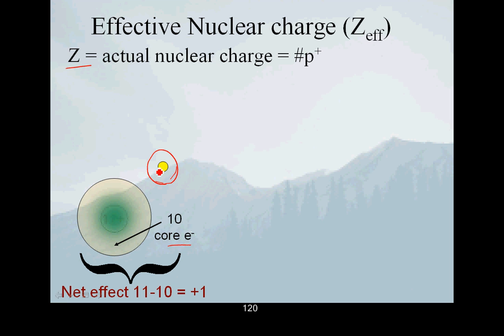So the nucleus might have 11 protons, but the 10 core electrons almost cancel it out. Because remember this electron doesn't like these core electrons - they're negatively charged. So the sodium atom really only sees a net effect of plus one. And that is the Z effective, the effective nuclear charge. Even though the actual nuclear charge of sodium is 11, the effective nuclear charge, that net effect because of those 10 core electrons, is actually only plus one.